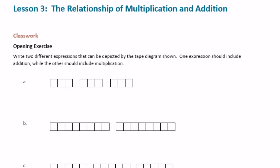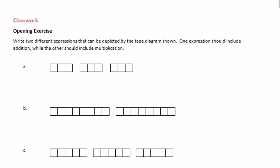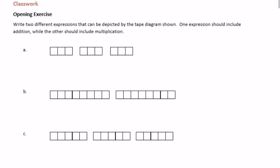6th grade module 4 lesson 3 classwork opening exercise: write two different expressions that can be depicted by the tape diagram shown — one expression should include addition while the other should include multiplication. For part A, we have three, three, and three, so this looks like three plus three plus three — that's one expression using addition.